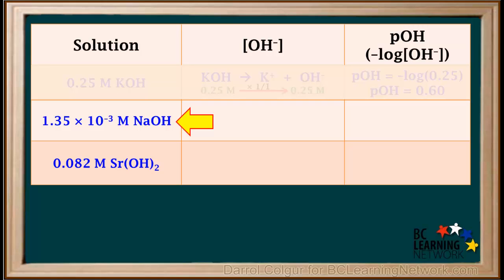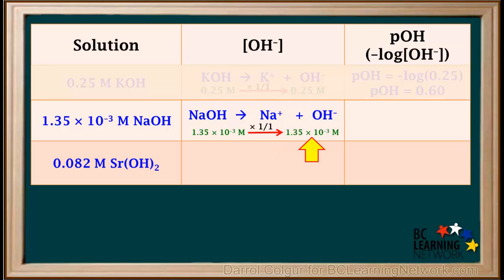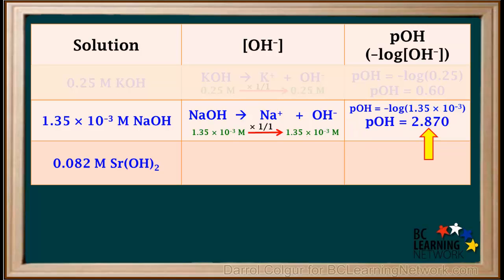Now we'll look at the NaOH solution. NaOH is a strong base, which dissociates completely into one Na⁺ ion and one OH⁻ ion. The concentration of NaOH as a whole is 1.35 × 10⁻³ molar, and the molar ratio of OH⁻ to NaOH is just 1 to 1. So the concentration of hydroxide is 1.35 × 10⁻³ molar. And the pOH is the negative log of 1.35 × 10⁻³, which comes out to 2.870 — expressed as three significant figures, like the given concentration value.